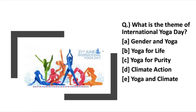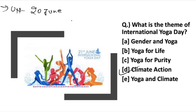What is the theme of International Yoga Day? The answer is option D — climate action. The UN is going to observe this day on 20th June with the 'Yoga with Guru' campaign and will conduct a panel discussion on June 21. International Yoga Day is observed on 21st June worldwide, while the UN is observing it on 20th June.